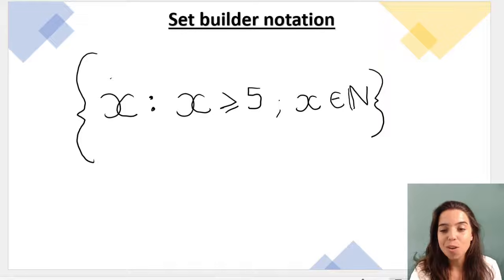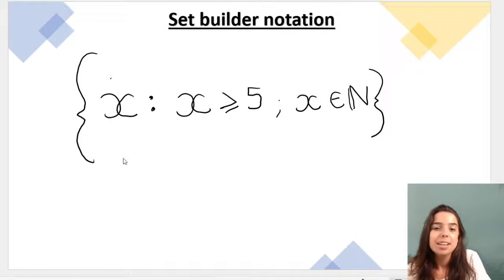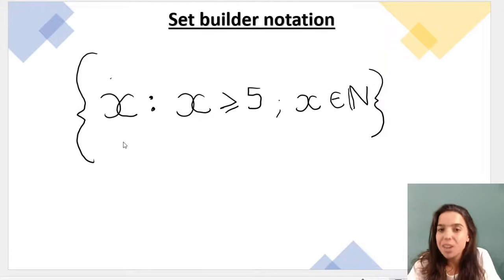This is an example of set builder notation. If you look very carefully you can see that set builder notation will always have curly brackets on either end. Then we state our variable.